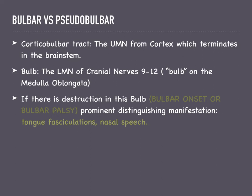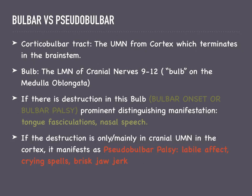The prominent distinguishing manifestation of bulbar onset ALS is tongue fasciculations, along with other clinical signs like nasal speech and saliva dribbling. Tongue fasciculation is a very prominent distinguishing manifestation. Now, if the motor neuron destruction is only or mainly in the cranial upper motor neurons in the cortex,